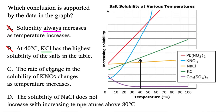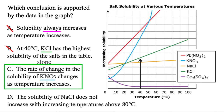Option C: the rate of change — which just means slope — in the solubility of KNO3 (the blue graph) changes as temperature increases. Basically, does the slope of KNO3 change? Slope is steepness, and if you're driving up this hill it's just getting steeper and steeper, so the slope definitely changes. So C is our correct answer here. Just take your time with these ones and you'll find it.